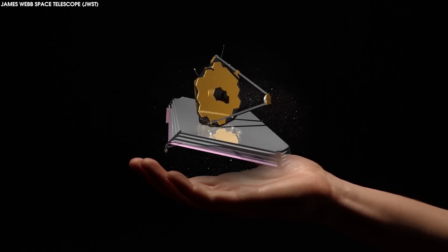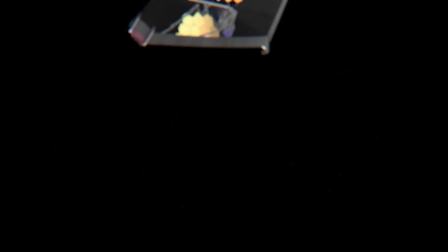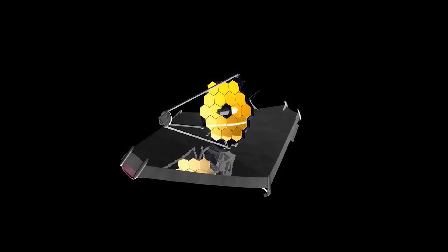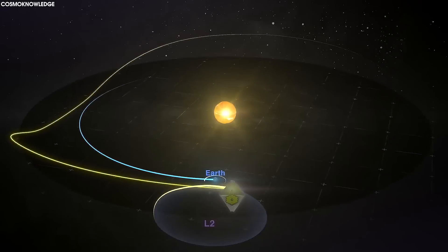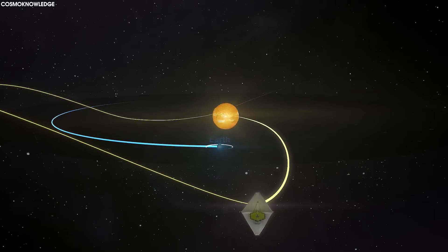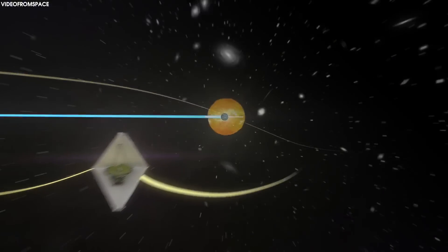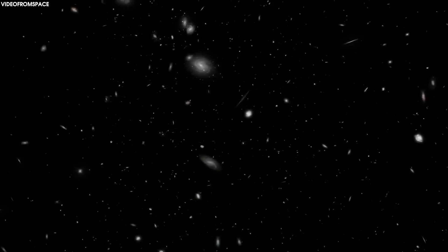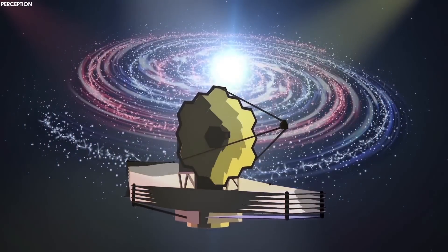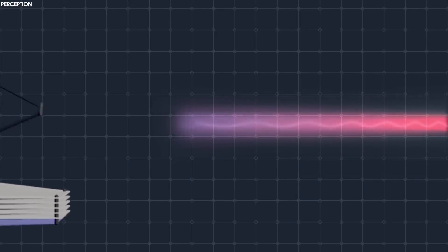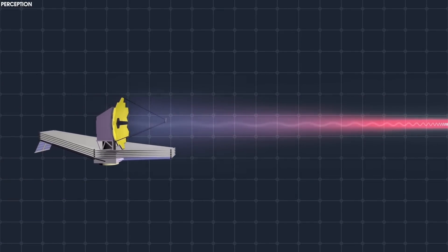The James Webb Space Telescope is a particularly potent time machine. It has the ability to see really far back in time to when the galaxies were young, because it was built to most optimally detect the light of the infrared spectrum.